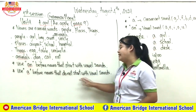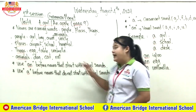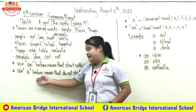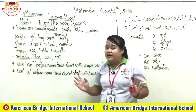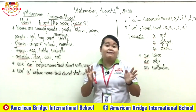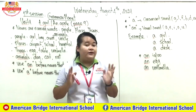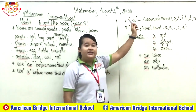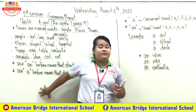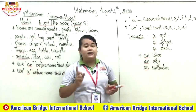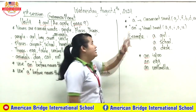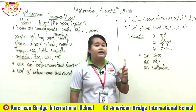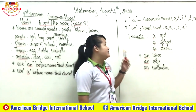You use 'a' before a noun that does not start with a vowel sound. Now let me explain what 'vowel' and 'consonant' sound mean. We use 'a' before nouns that start with a consonant. You need to remember which letters are consonants.